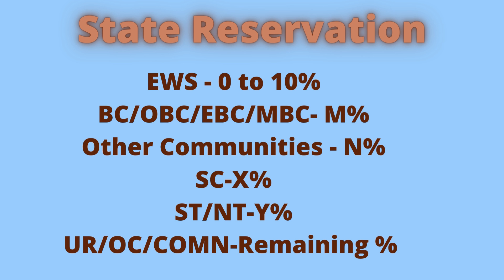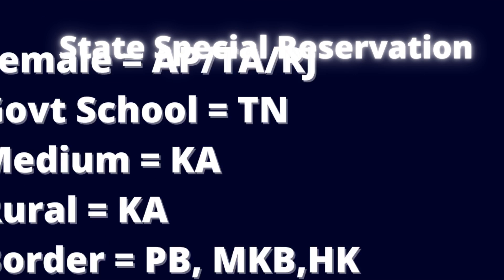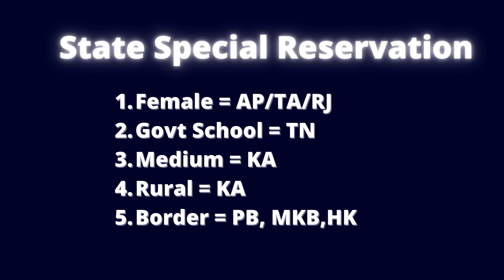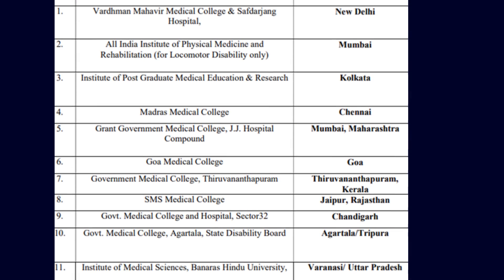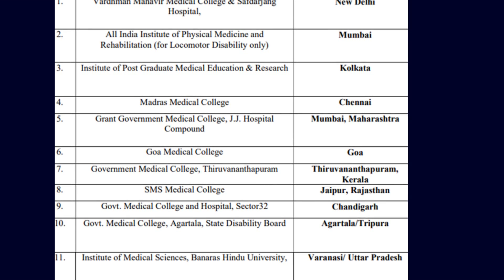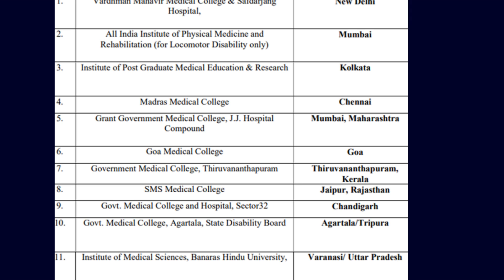Female reservation is available in states such as Andhra, Telangana, Rajasthan, etc. Government school students have reservation in Tamil Nadu state counselling. Kannada medium students and students from rural areas have reservation in Karnataka state counselling. Border area reservation is applicable in Punjab, Maharashtra and Karnataka state counselling. Students who apply under physically challenged reservation for All India Quota should get a disability certificate from the designated 11 medical college hospitals only, and the disability range should be between 40% and 80% to claim this quota.